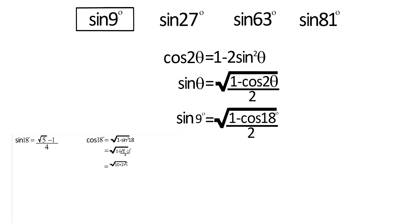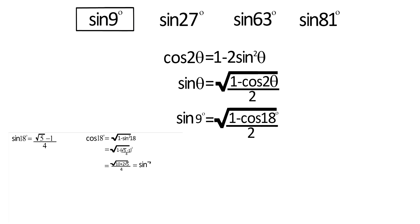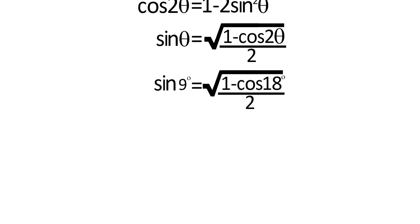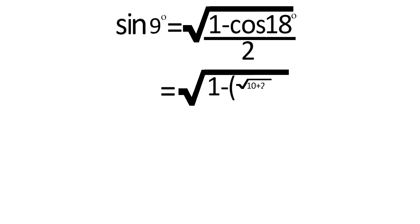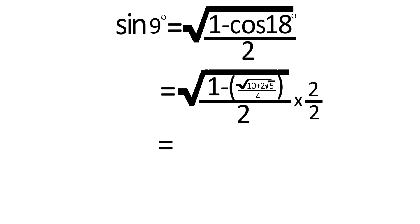We found the value of cos 18° in our previous video — check the description box below if you want to watch that. After putting the value of cos 18° and solving, we get (1/4)√(8 − 2√(10 + 2√5)).